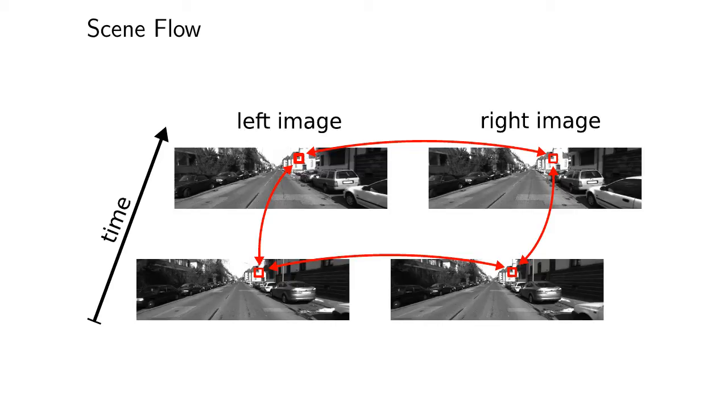We consider the minimal setup necessary for scene flow estimation, which consists of two calibrated stereo images captured at two consecutive points in time. Finding correspondences in all four views yields depth information at both frames, and hence uniquely defines the 3D scene flow.